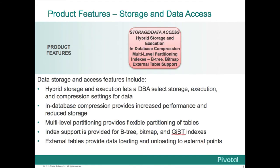In terms of storage, Greenplum has two kinds: traditional row-based storage as well as column-based storage. Within a given table, certain portions can be stored column-wise and certain portions row-wise depending upon the use case — this is known as polymorphic storage. We also have in-database compression, which not only makes data smaller but in many cases makes it faster by decreasing the amount of I/O required to access that data. We provide index support of various kinds, though Greenplum tends to be an index-poor database compared to traditional OLTP databases. External tables provide a way to look at data outside the database as though it were a table.